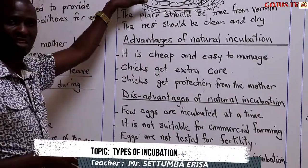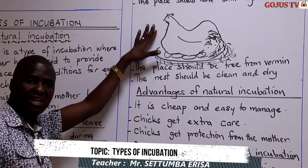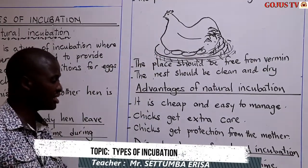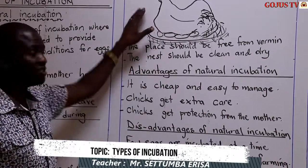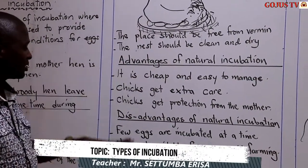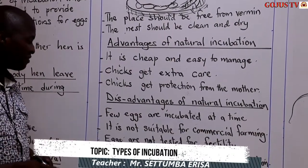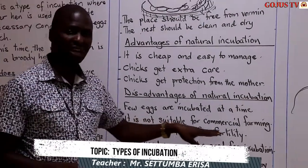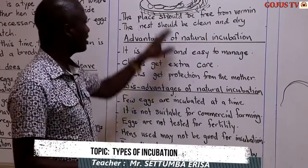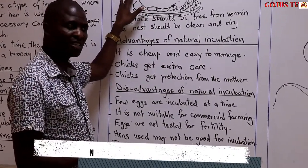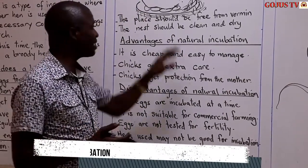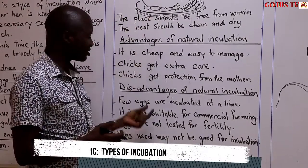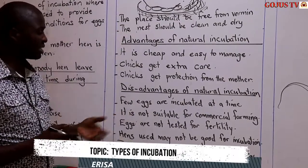This mother hen can sit on — if a mother hen is big enough, it can only incubate up to 15 eggs. So you can imagine, if you wanted to hatch a hundred eggs, you need more than eight birds to do the incubation. So eggs incubated at a time are very few. Number two, it is not suitable for commercial farming. If you want eggs to hatch so that you can sell chicks, this hen is going to incubate only 10 to 15 eggs, and yet there is a businessman who wants to buy 300 chicks. So you would need 30 mother hens, meaning this type of incubation is not suitable for commercial farming.